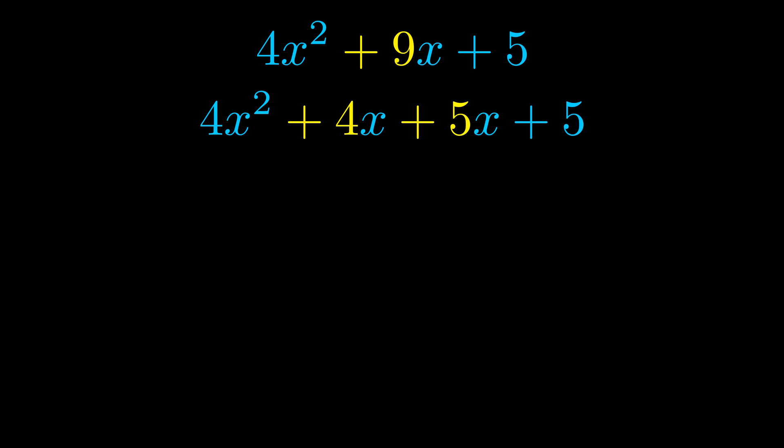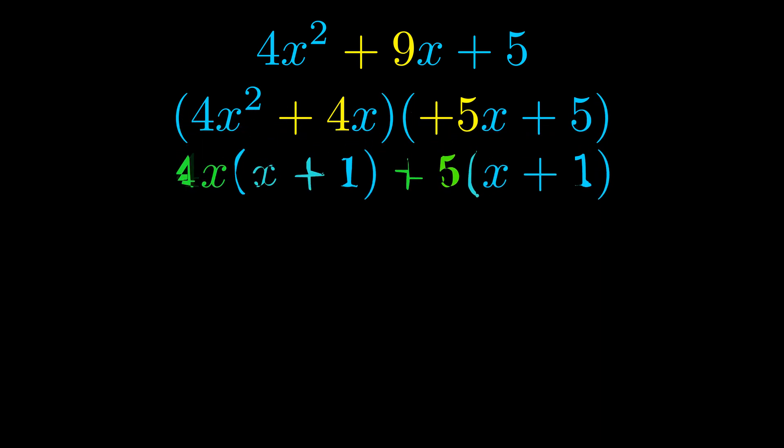Once we've done this, we go ahead and put parentheses around the first term and the last term. And we do that so that we can take the greatest common factor out of both terms. We can see the greatest common factor is now outside in green.